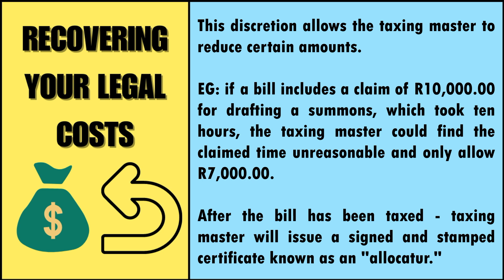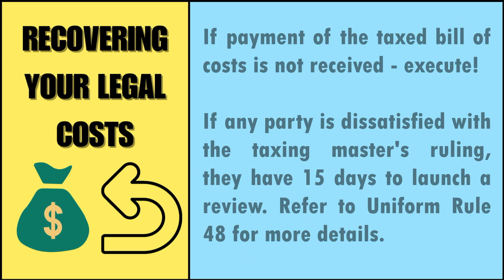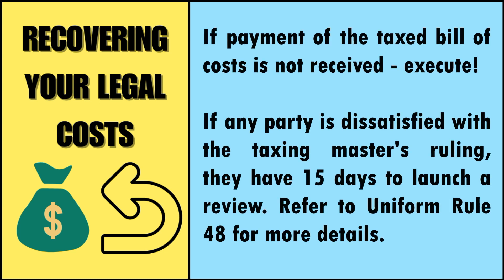After the bill has been taxed, the taxing master will issue a signed and stamped certificate known as an allocature. This certificate officially permits the recovery of the taxed amount from the opposition. If payment of the taxed bill of costs is not received, the successful party can utilise standard execution methods to recover the amount.